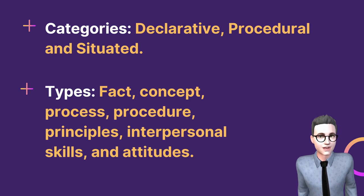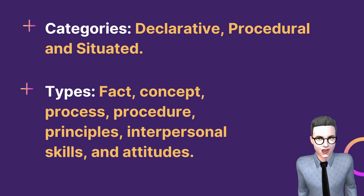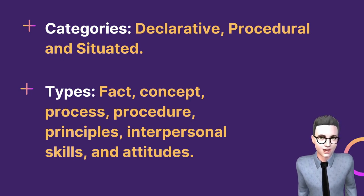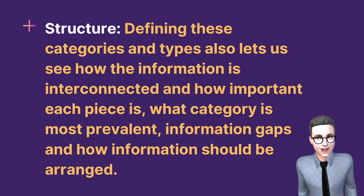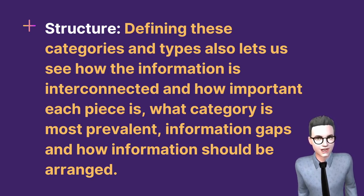Categories include declarative, procedural, and situated. Types are fact, concept, process, procedure, principles, interpersonal skills, and attitudes. The last element is structure. Defining these categories and types also lets us see how the information is interconnected and how important each piece is — what category is most prevalent, where the information gaps are, and how information should be arranged.